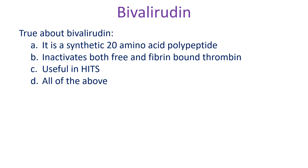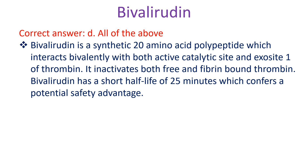True about bivalirudin. A: it is a synthetic 20 amino acid polypeptide; B: inactivates both free and fibrin-bound thrombin; C: useful in HIT; D: all of the above. Correct answer D: all of the above. Bivalirudin is a synthetic 20 amino acid polypeptide which interacts bivalently with both the active catalytic site and exosite one of thrombin.